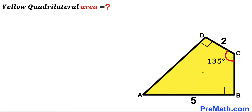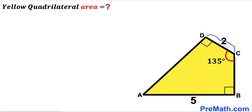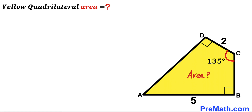Welcome to Pre-Math. In this video we have a yellow shaded quadrilateral ABCD, where side AB is 5 units, side CD is 2 units, angle BCD is 135 degrees, and the angles at A and D are each 90 degrees. Our task is to calculate the area of this yellow shaded quadrilateral ABCD.